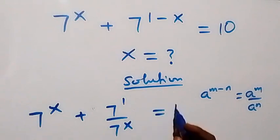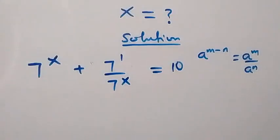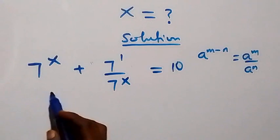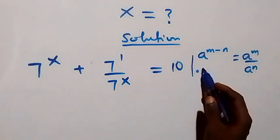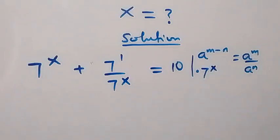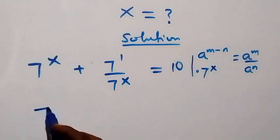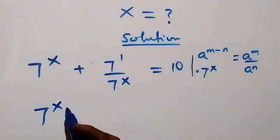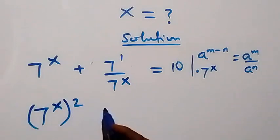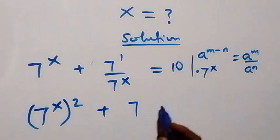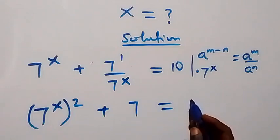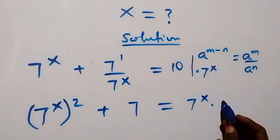This equals to 10. From here, we can multiply through by seven raised to power x. Then seven raised to power x times seven raised to power x is the same as seven raised to power x squared. Then plus seven raised to power one, which is seven, equals to seven raised to power x times 10.